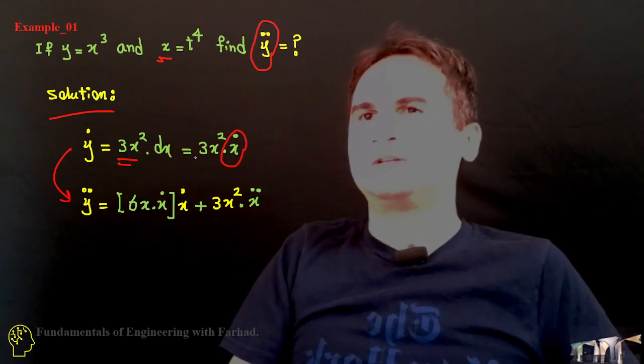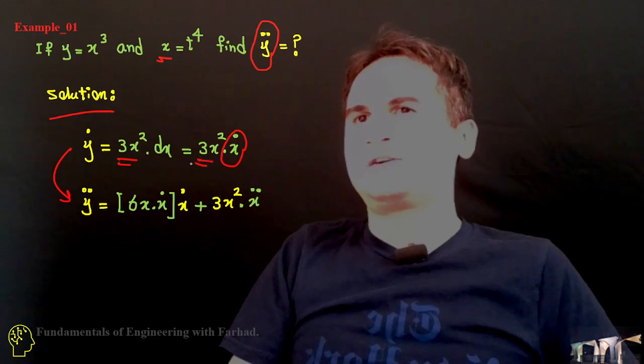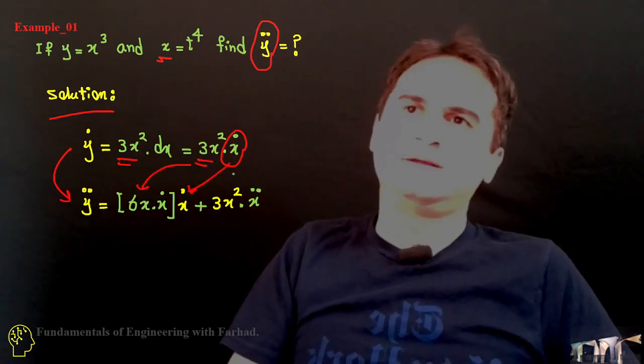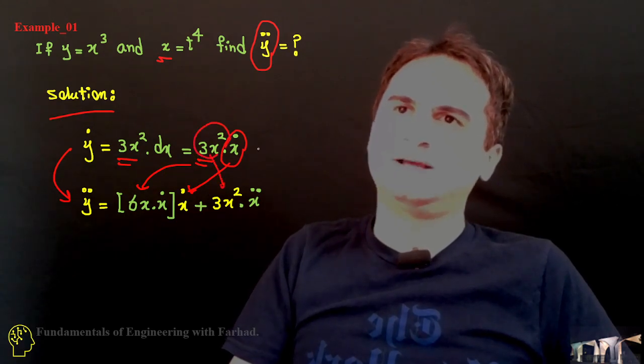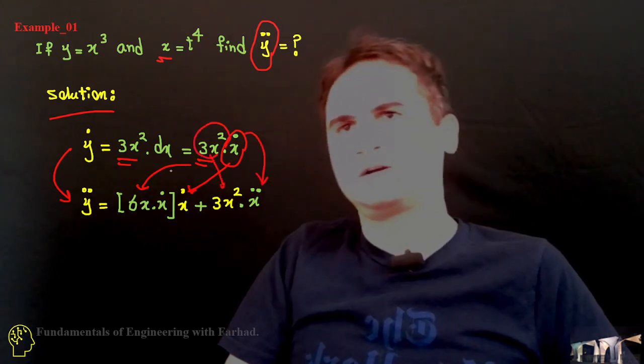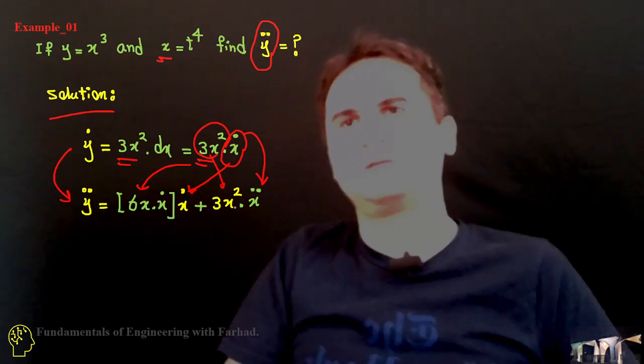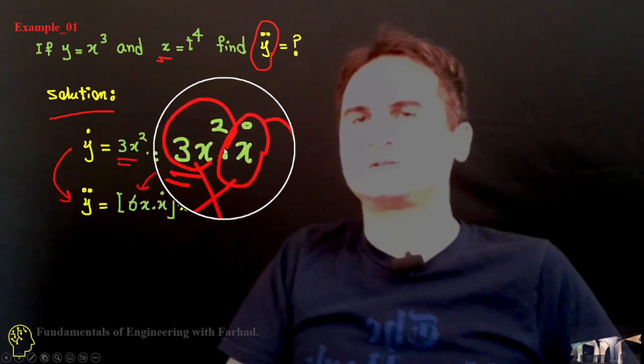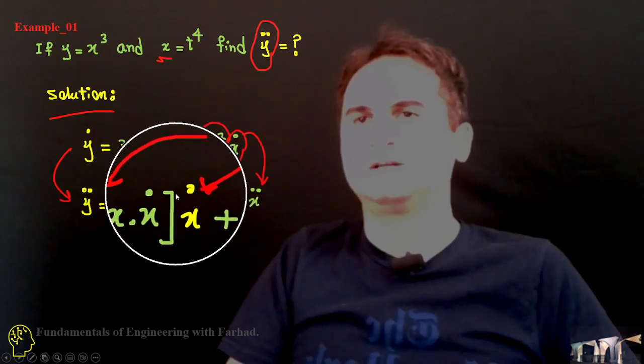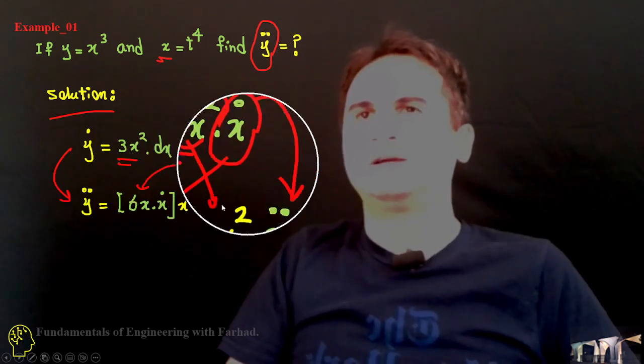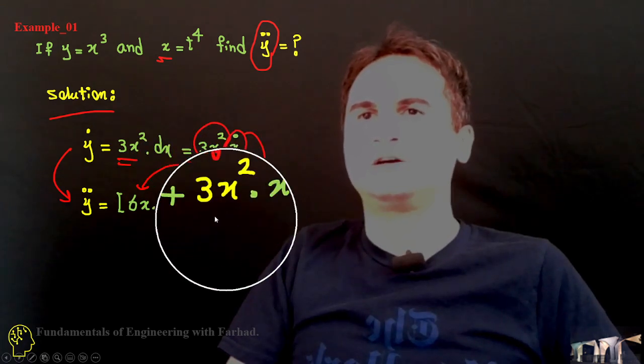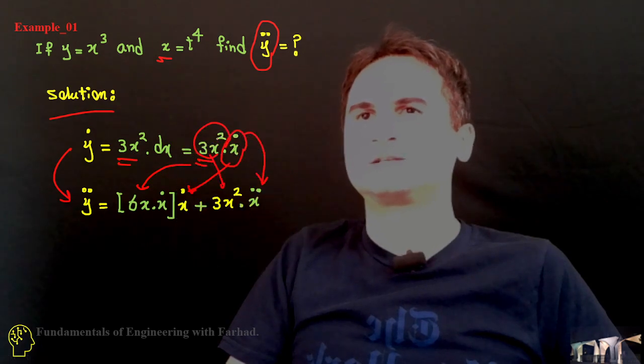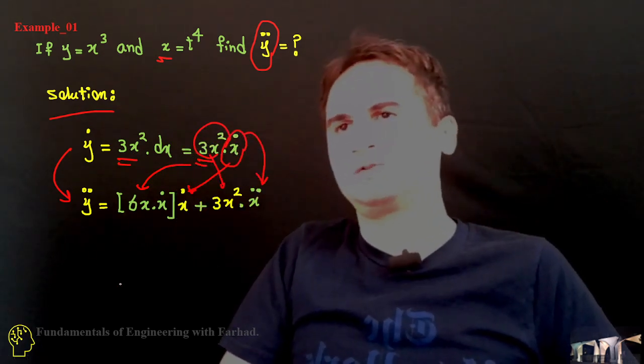Let's put it this way. Derivative of first part times the second. And then this part as a constant and derivative of the second part. So, it's like a multiple derivation. First we just derivate the first part times the second part as a constant, like the yellowish part over here. And then 3x squared like constant times the second derivative of x. Derivation of x dot which is x double dot.